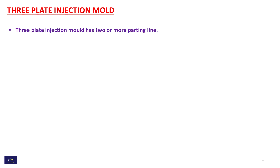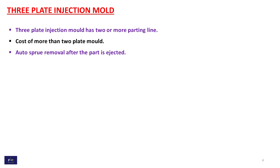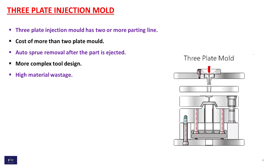3-plate injection mold. The 3-plate injection mold has 2 or more parting lines. Cost is more than the 2-plate mold. Auto-sprue removal after the part is ejected. More complex tool design. High material wastage. This is the image of the 3-plate injection mold.